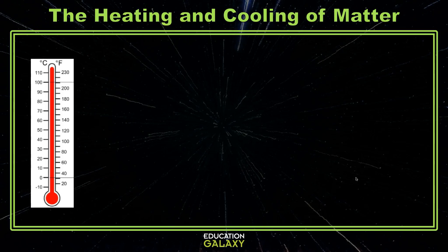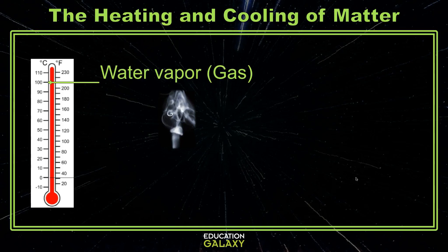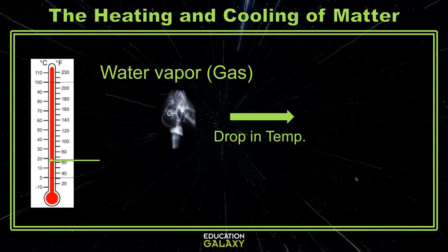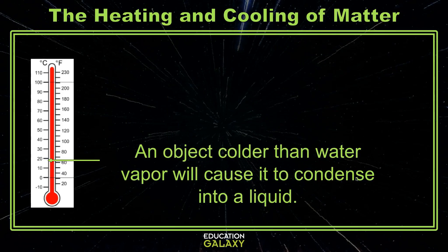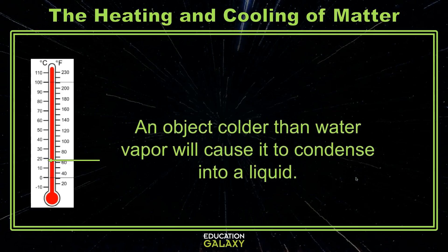Now let's look at what happens if you start off with water vapor, or water in a gas form, and want to change it into a liquid. If someone just filled a bathtub up with water, then you'll notice that there's a lot of steam or water vapor in the air of the bathroom. In order to change that water vapor, or gas, back into a liquid, all you have to do is expose that warm gas to something that is colder. This colder object could be the glass of the bathroom windows, or even the bathroom mirror. When the gas or water vapor molecules hit the cold glass, then they cool down quickly, which causes them to change back into a liquid. That is why you'll see drops of water forming on the glass.